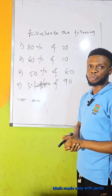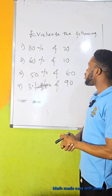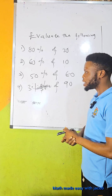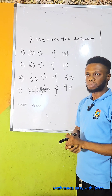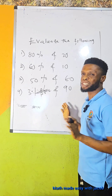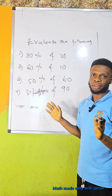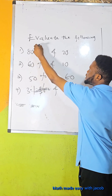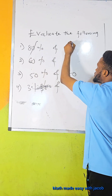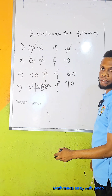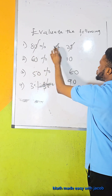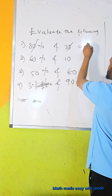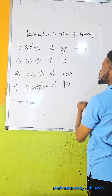The first one: 80% of 20. Please, there are only easy ways. Zero can cancel out the zero. Eight times two is 16.